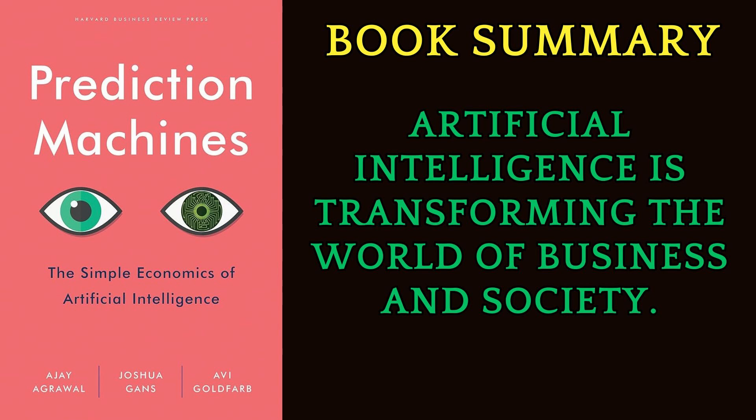Part 3: Decision Making — This part examines how AI affects the division of labor between humans and machines, and how it influences the value and role of human judgment. It also discusses the challenges and opportunities of fully automated decision making, and how to manage the risks and uncertainties of AI.